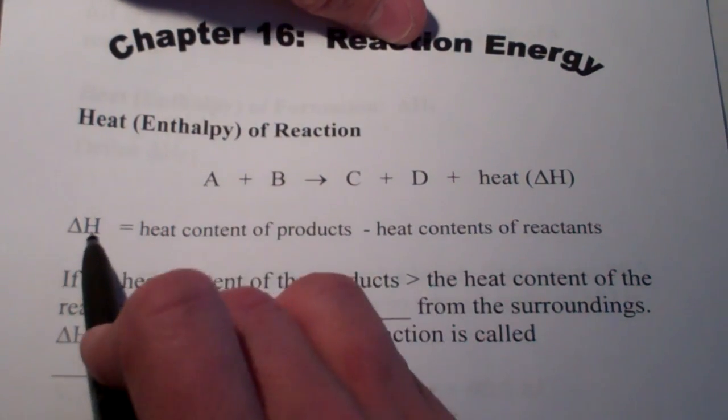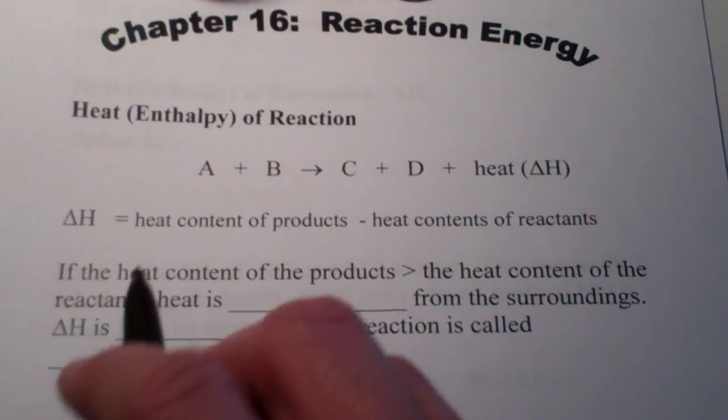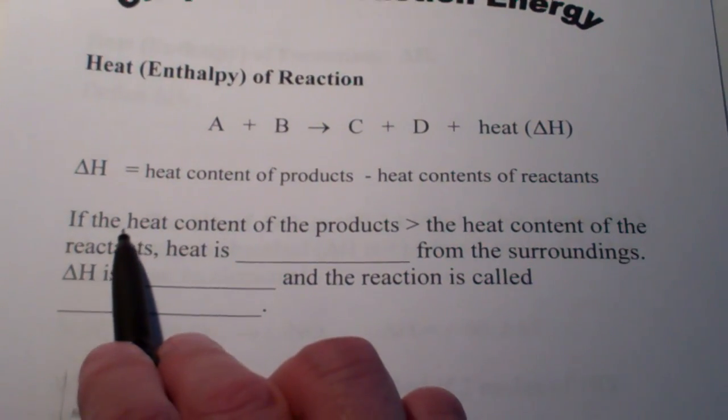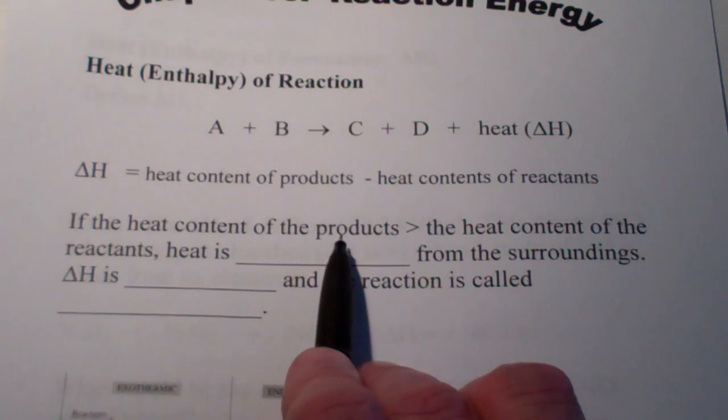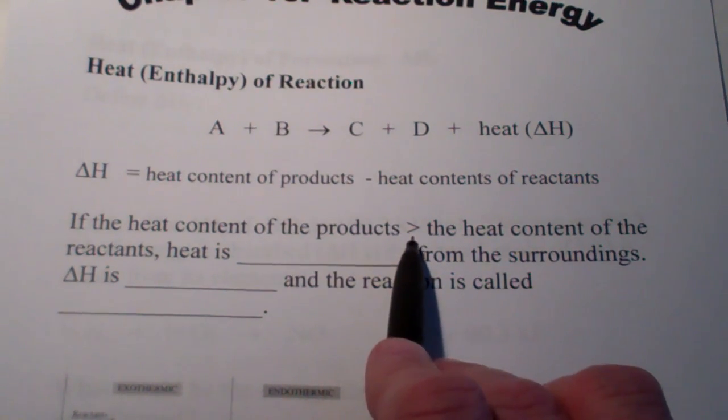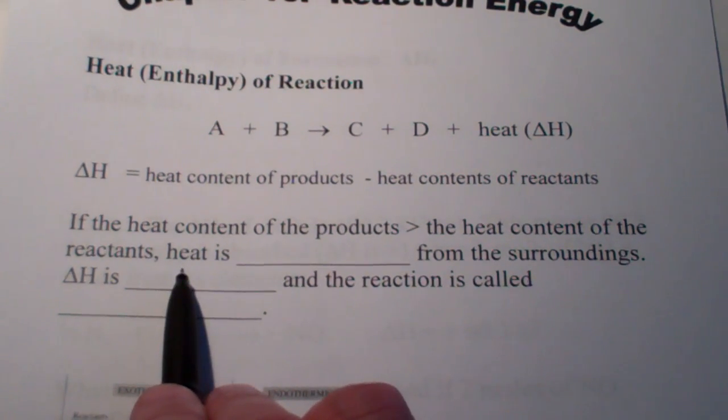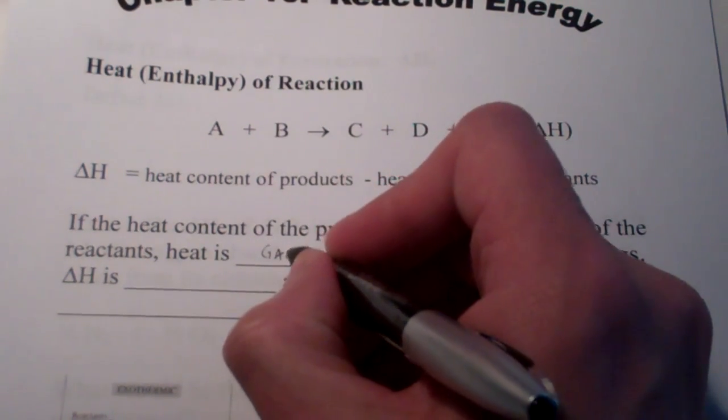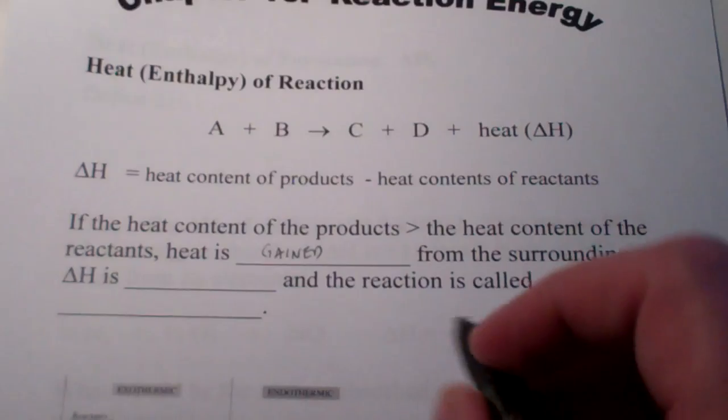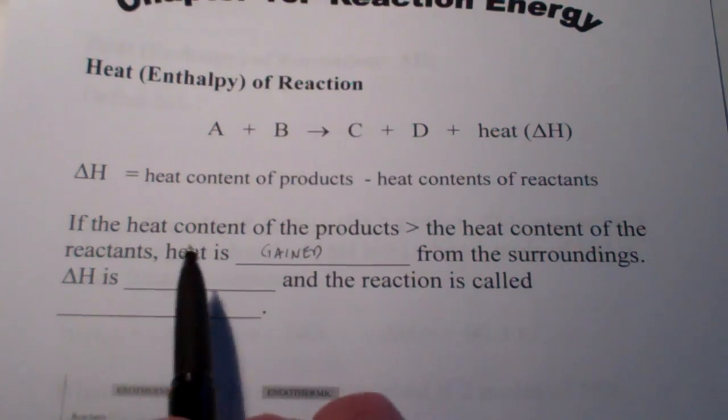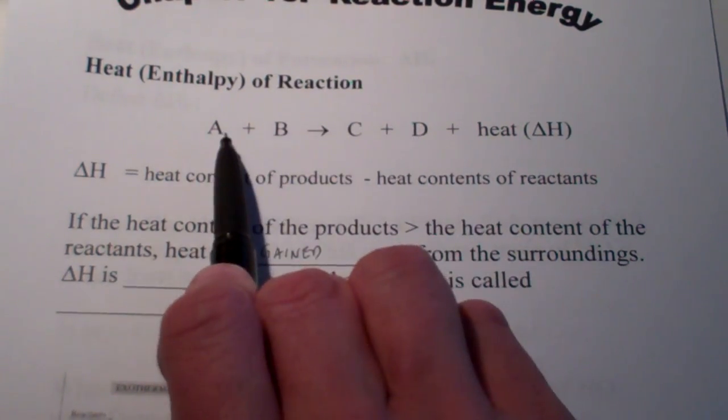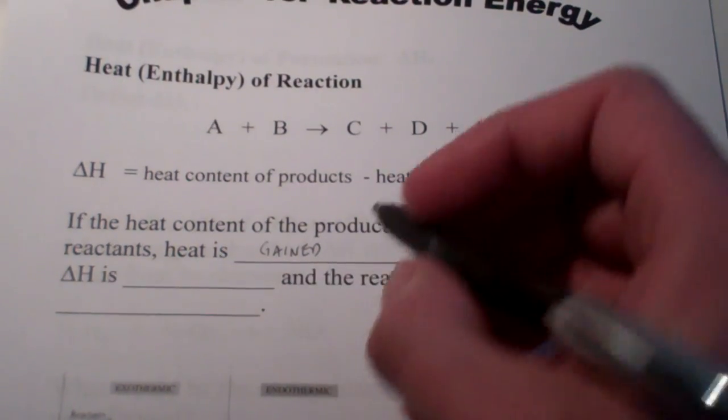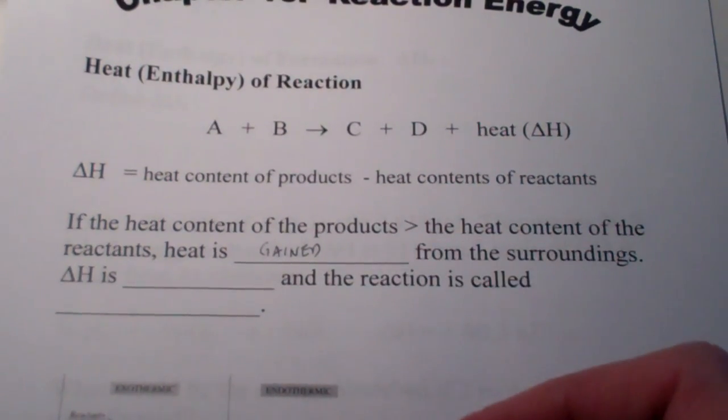The resultant will be the delta H. Now, it turns out, and think about this as we talk about this, if the heat content of the products is greater than the heat content of the reactants, heat is gained from the surroundings. It has to be. If my products have more heat than what I started with, where did that heat come from? Well, it had to be gained or added from the surroundings.